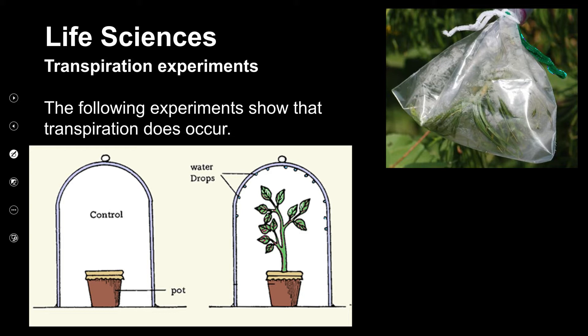We're going to look at some experiments. The first one: put a plant inside a glass bottle. What do you notice on the inside of the glass bottle? Water droplets. Even if you don't have equipment at school, a simple plastic bag around a leaf on a bush left in the sun will show you that transpiration does occur — you will see liquid collecting on the inside of the bag or bottle.